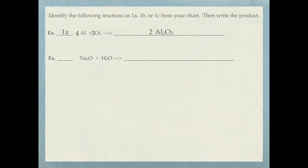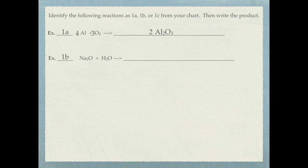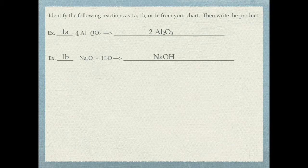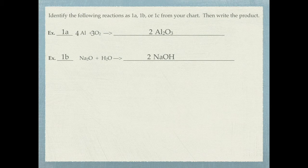Next, sodium oxide reacts with water, making this a 1B reaction — it forms a base. The base is the metal sodium combined with hydroxide. Na has a plus one charge and hydroxide has a minus one charge, so the formula is NaOH. To balance, there are two sodiums on the reactant side, so put a two in front of the product NaOH.